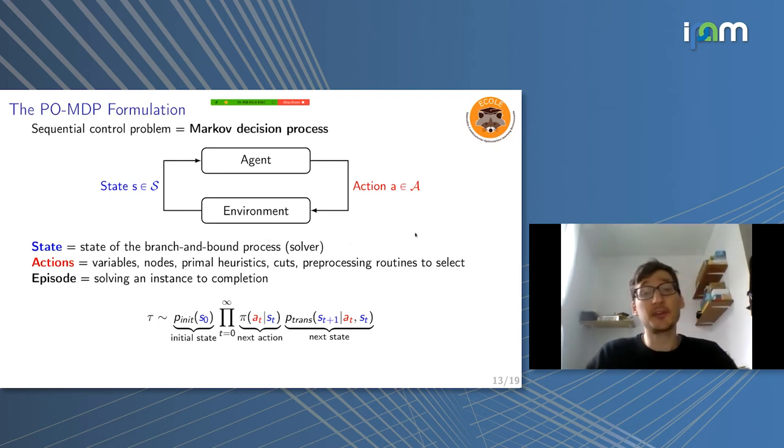In this framework, the state would be basically the state of the solver, like the whole memory of the computer program. This is your state. The actions would be depending on the task, variables, nodes, or cuts, or whatever. And we will talk about an episode. When you run an MDP, you start in an initial state. You have a distribution over the initial states. This will depend on which problems you tackle. Maybe you will just care about some families of problems. And also, like the preprocessing, say you do branching, you just feed an instance to SCIP, it does all the preprocessing stuff, and it gets you into this initial state.